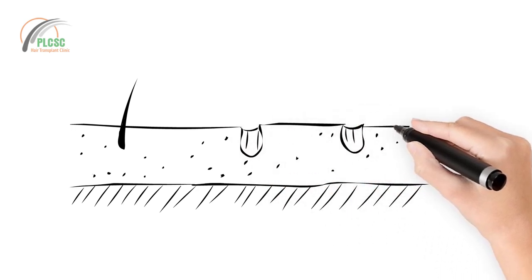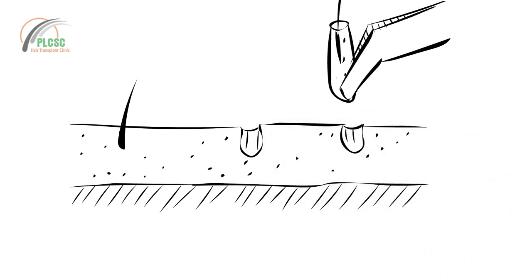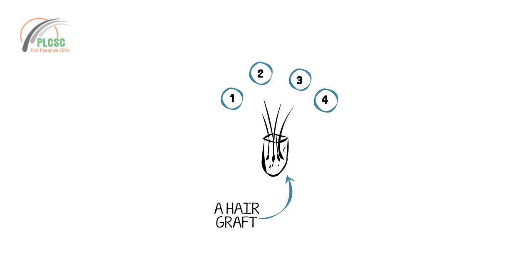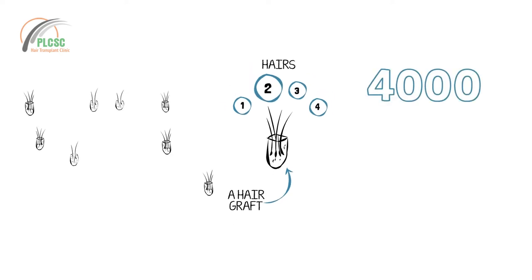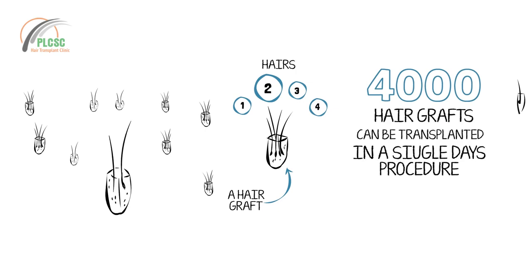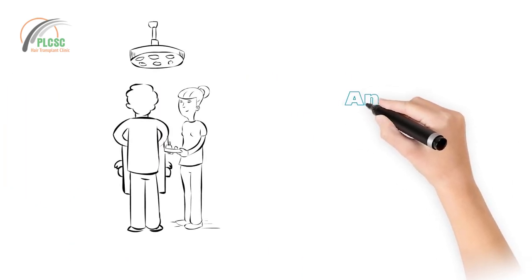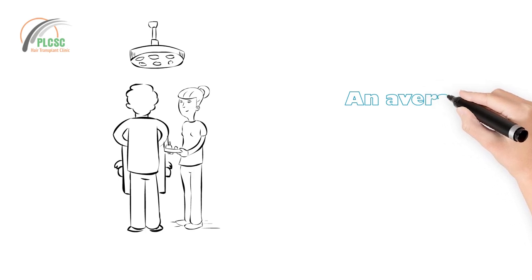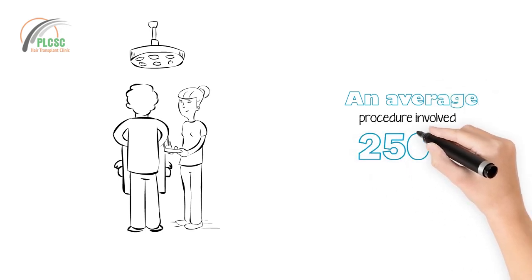This is done by making small incisions in the recipient area where they have to be transplanted. A hair graft is a natural group of hair containing one to four hairs each. On average there are two hairs in an individual hair graft. Around 4,000 hair grafts can be transplanted in a single day. An average hair procedure for a patient of moderate hair loss involves the transplantation of approximately 2,500 hair grafts.